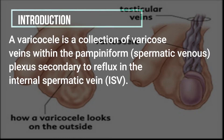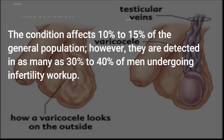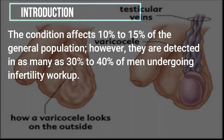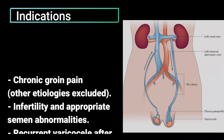In today's video we are going to see about varicocele embolization. A varicocele is a collection of varicose veins within the pampiniform plexus secondary to a reflux in the internal spermatic vein. The condition affects 10% to 15% of the general population; however, they are detected in as many as 30% to 40% of men undergoing infertility workup.